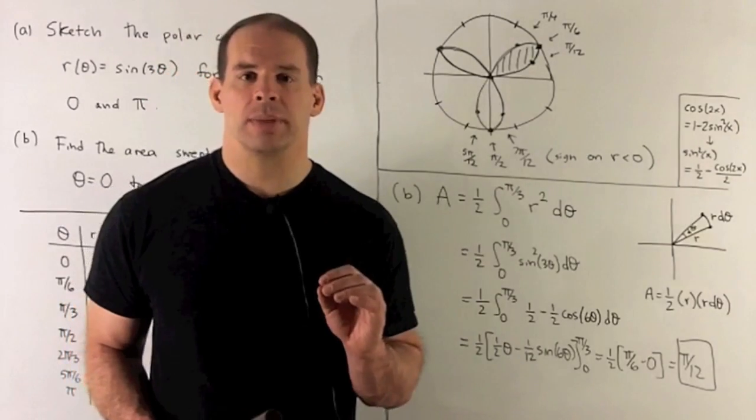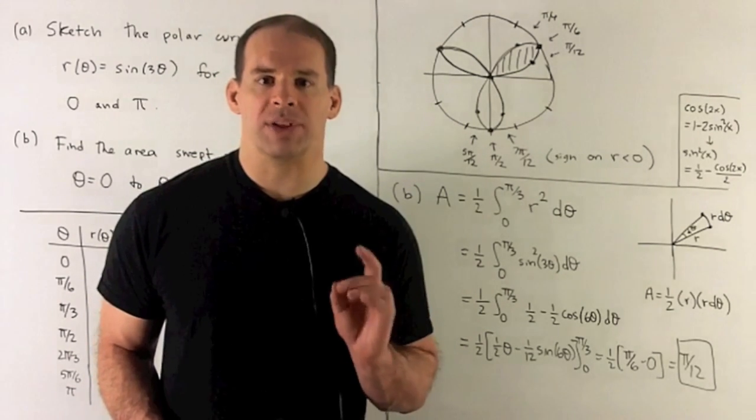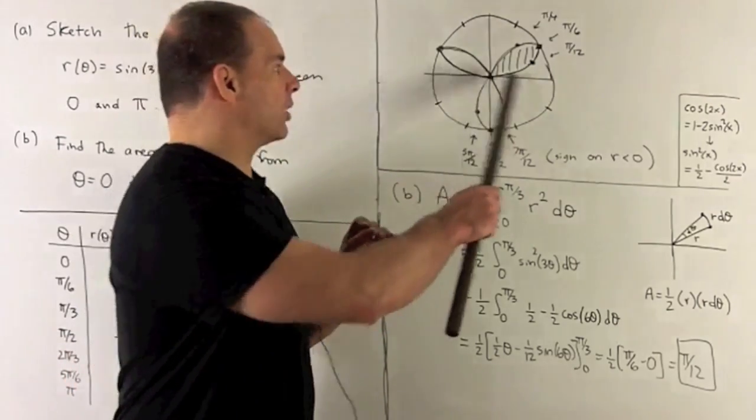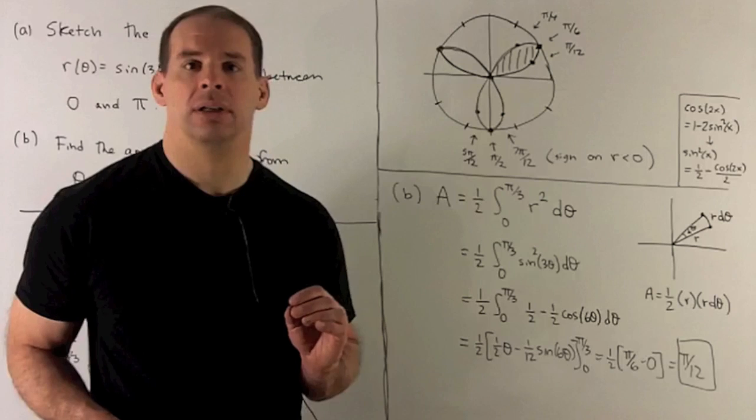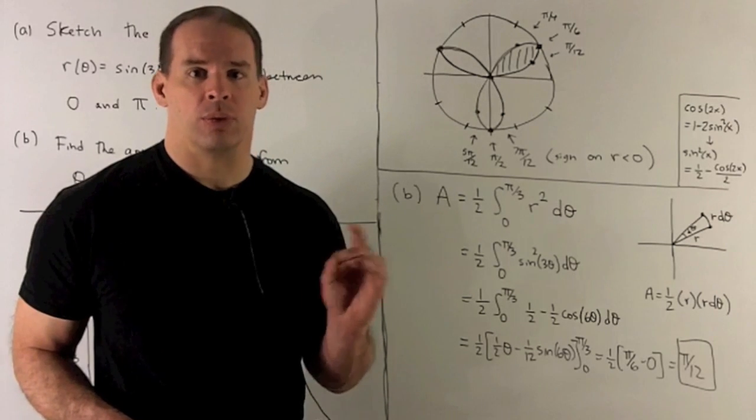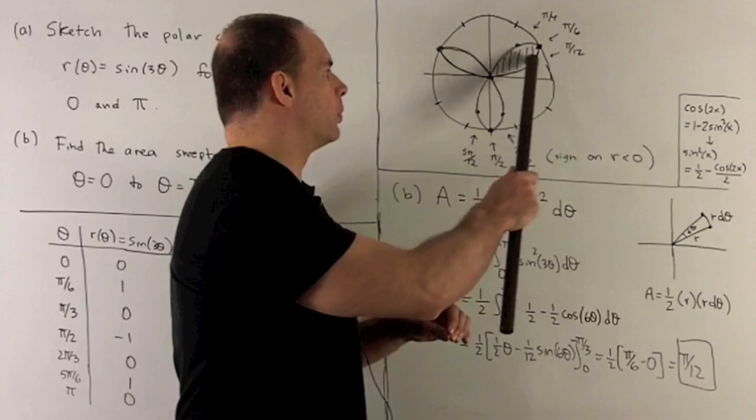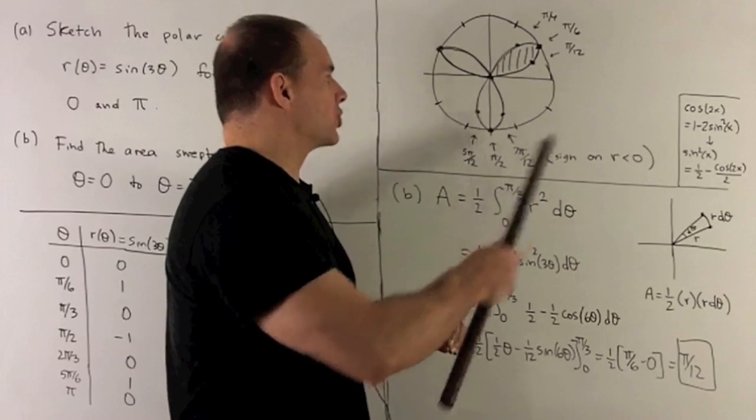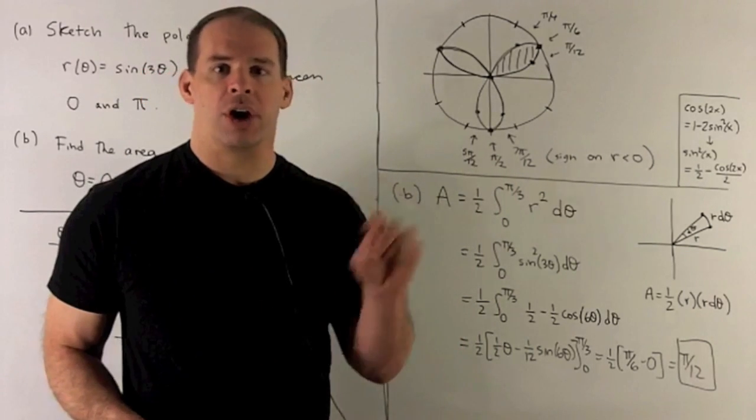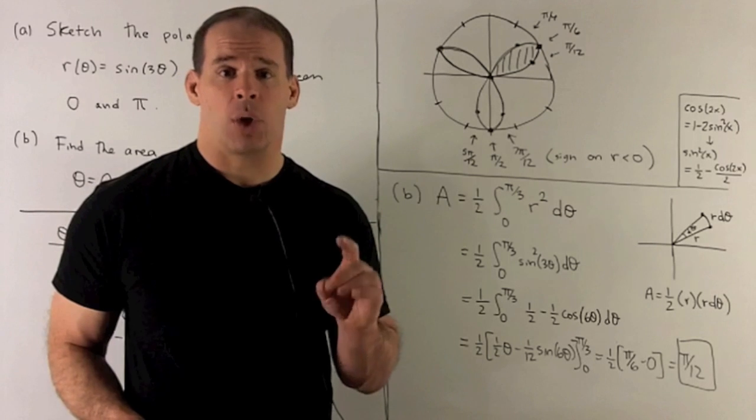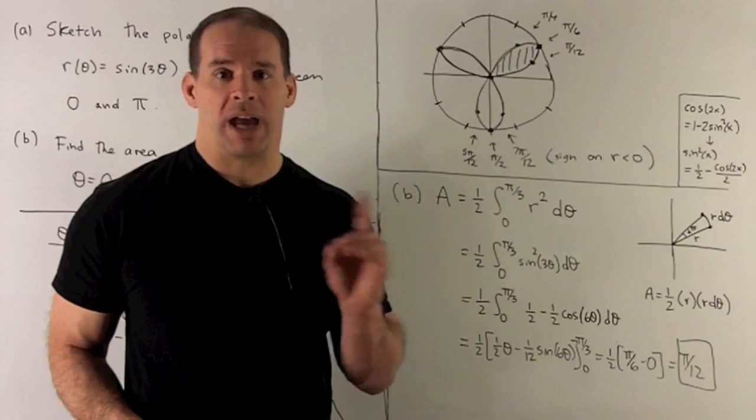Now we plot those points. First point up, (0,0), so if I go angle zero, radius of zero puts me at the origin. Next angle up is π/12 with a radius of 0.7. So we find our π/12, go out by 0.7, that's that point there. The circle is the unit circle, and I know the entire curve is going to live inside the unit circle because sine is always between -1 and 1, so our radius is always between -1 and 1.